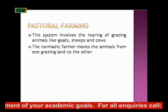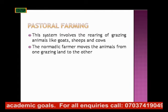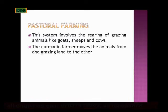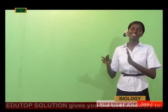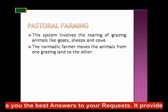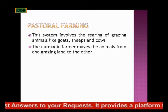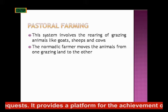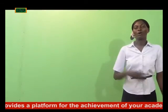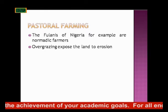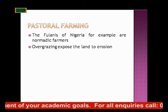Then there is pastoral farming. Pastoral farming involves rearing of grazing animals — you rear grazing animals like goats, sheep and cows. So this is like half of mixed farming; it focuses just on rearing of animals like cows, goats and sheep. The nomadic farmer, like the Fulanis in Nigeria, move their animals to more grazing land. They allow the animals to feed on green grass, moving across places looking for green pasture for their livestock.